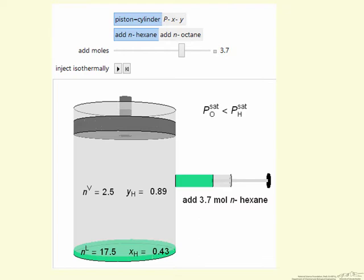When we push the play button, the system will go to equilibrium, and we want to understand what's the equilibrium condition when this happens.